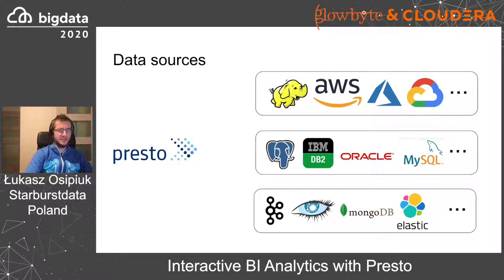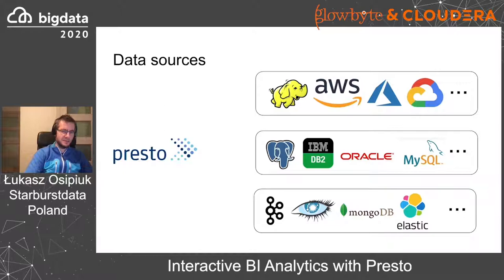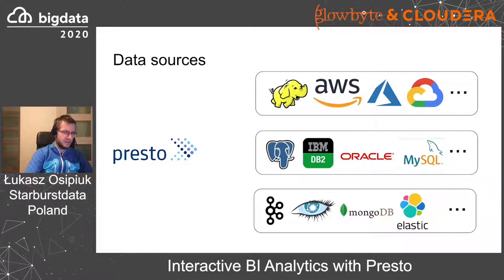Table metadata is read from Hive Metastore or Amazon/Google Metastore, though other options can be added too. The other group of supported data sources are relational databases, including Oracle, PostgreSQL, MySQL, DB2, and others. And the last group are non-relational databases such as MongoDB, Cassandra, Elasticsearch, and Kafka.